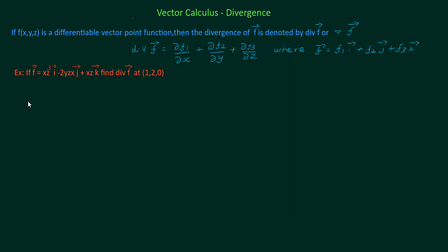Suppose if the given function has only two variables, x and y, then del dot f vector is ∂f1/∂x + ∂f2/∂y, where f1 and f2 are coefficients of i and j vector. So based on the given variable, we have to write the formula for del dot f vector.